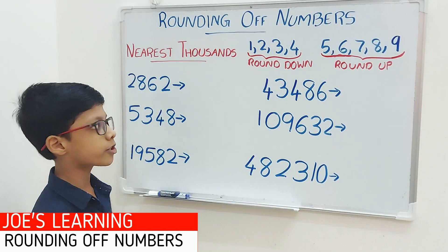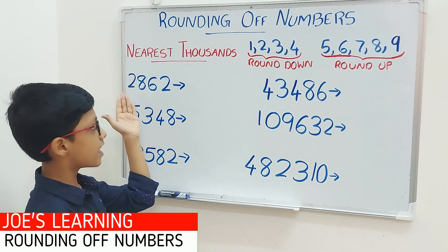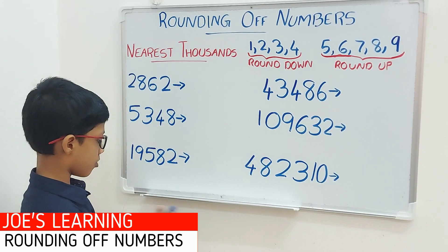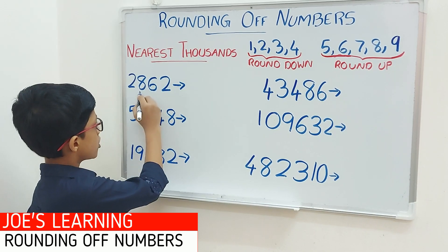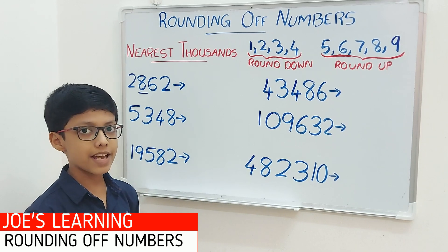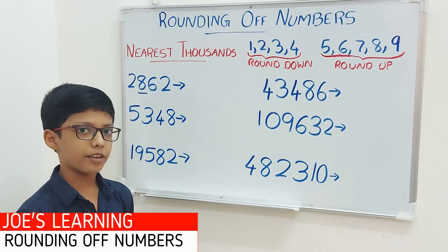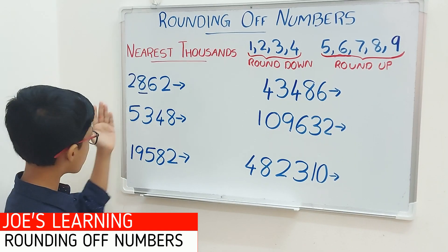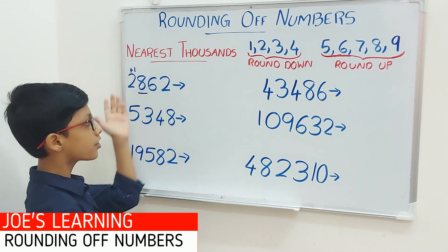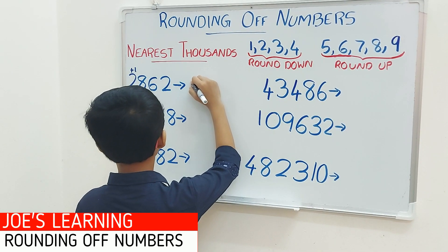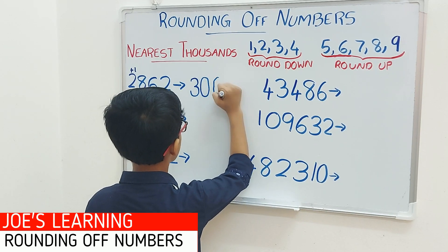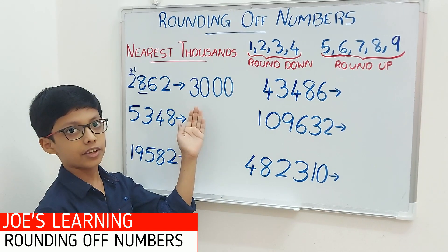Let's try out some examples. My first example is 2862. First you have to look at the digit in the hundreds space — 8 is in the hundreds space. We compare it with 5: 8 is greater than 5. So we have to put a 0 in the ones, tens and hundreds space and add 1 to the digit in the thousands space. So 2862 rounded off to the nearest thousands equals 3000.